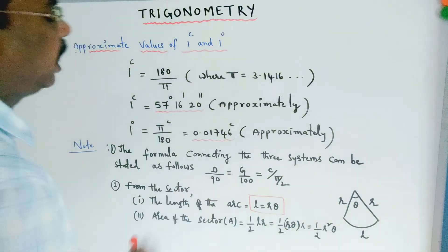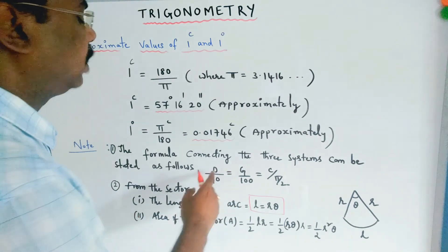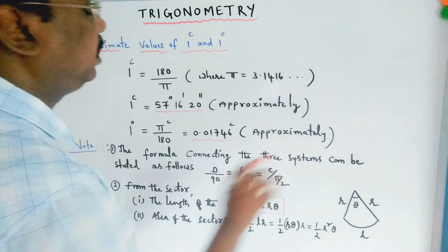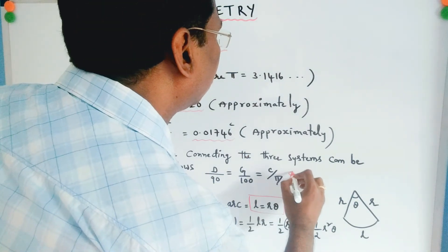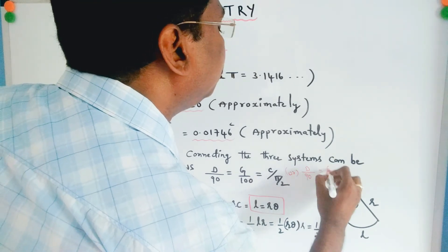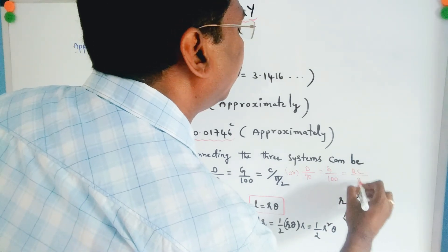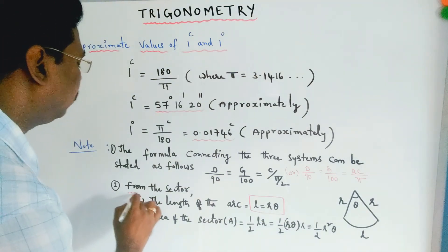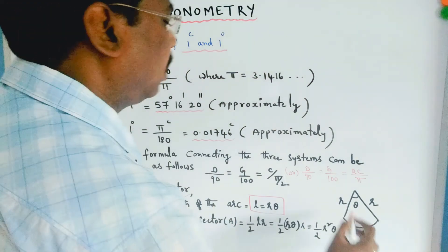Note the formula connecting the three systems: D/90 = G/100 = 2C/π, where D denotes degrees, G denotes grades, and C denotes radians.